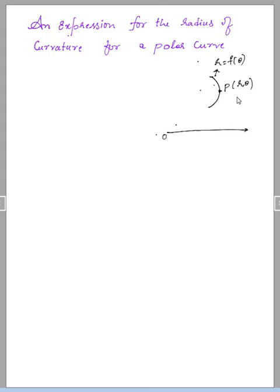Join the initial point and the point which we considered on the curve. That is nothing but a radius vector. The radius vector is OP and makes an angle theta. Draw a tangent at this point P, which touches the initial line and makes an angle psi. This is the graph I have constructed.